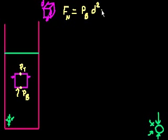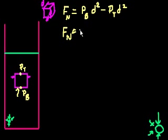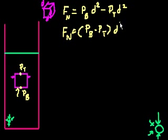Minus the pressure at the top times the surface area of the top, which is also d squared. We can factor out d squared, so the net force equals the pressure at the bottom minus the pressure at the top — the difference in pressure — times the surface area d squared, which is the same for any side of the cube.